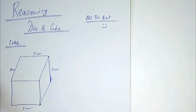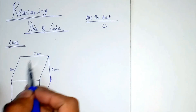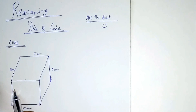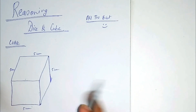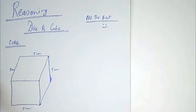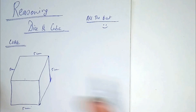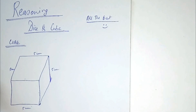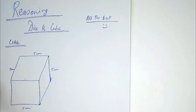So without any delay let's begin. In a cube, all sides are equal. For example, the size here is 5 centimeters. In the case of a cuboid, the sides are not equal — but that is not in our syllabus. The main difference is: in a cube all sides are equal; in a cuboid the sides are not equal.